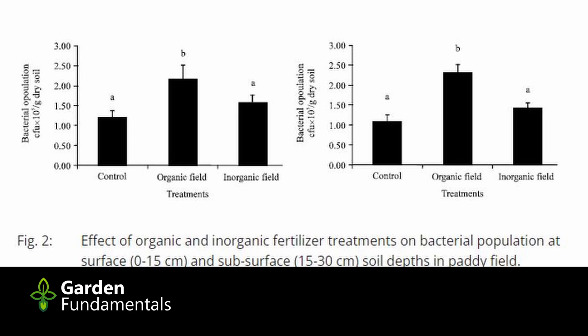They also looked at bacteria in the soil. In the bacteria chart, control is on the left, organic in the middle, and synthetic on the right. Organic increased the amount of bacteria. Synthetic also shows a possible slight increase, but the letters above the bars indicate whether it's statistically significant — for bacteria, it wasn't. What is important is that the study showed no decrease in microbes, and if anything, some of them increased in number.